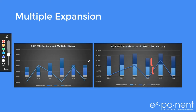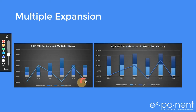Here in Canada, we see that multiple expansion actually contracted compared to 2018. So really the earnings carried the day here, and obviously they were negative, so we had a negative number.